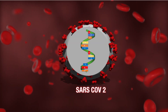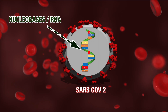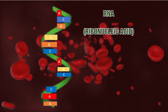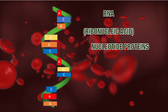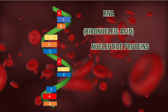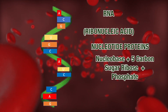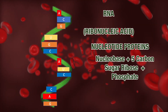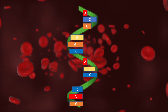SARS-CoV-2 has a single-stranded RNA. RNA stands for ribonucleic acid, composed of nucleotide proteins. Nucleotides are composed of a nucleobase, a 5-carbon sugar, and one or more phosphate groups.